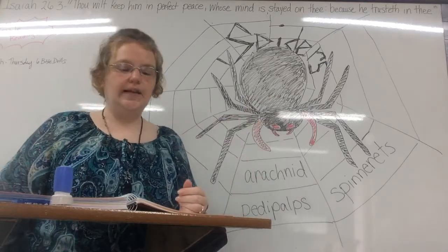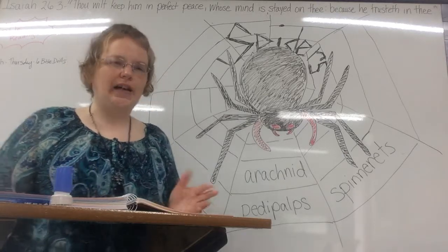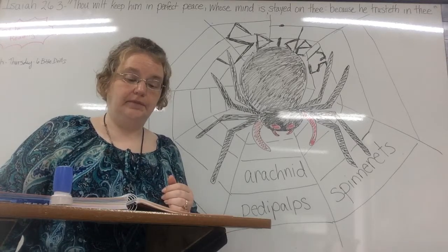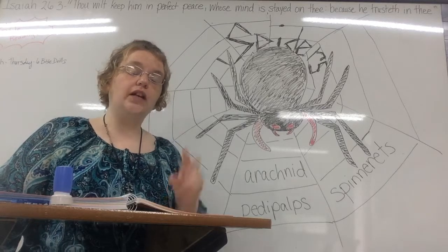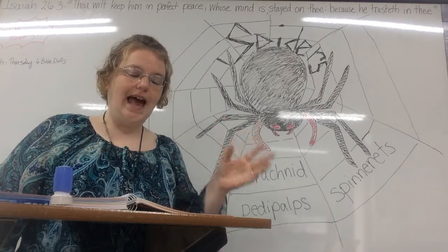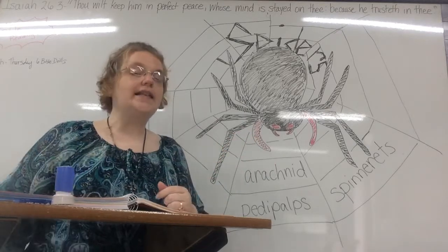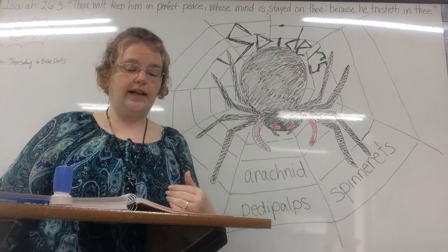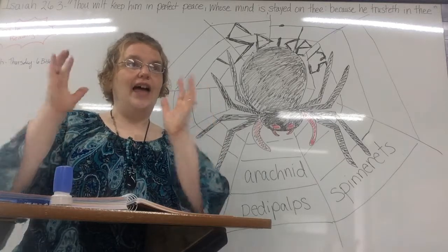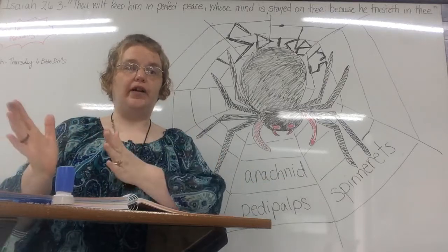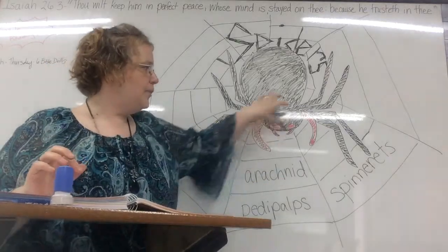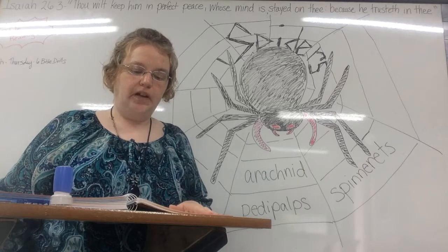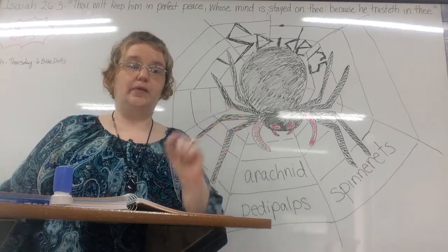Like an insect, a spider has an exoskeleton and jointed legs, but a spider has only two body parts. The head and thorax of a spider are joined into one section called the cephalothorax. So an insect has head, thorax, and abdomen, but a spider has just two parts: the cephalothorax and the abdomen.